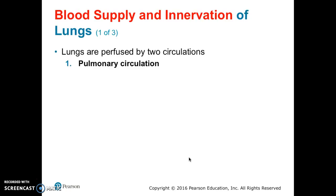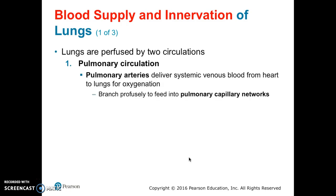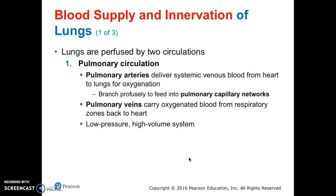Next, we move on to the blood supply and innervation of the lungs. The lungs are perfused by 2 circulations. The first is the pulmonary circulation: pulmonary arteries deliver systemic venous blood from the heart to the lungs for oxygenation and branch profusely to feed the pulmonary capillary networks. Pulmonary veins carry oxygenated blood from the respiratory zones back to the heart. The pulmonary circulation is a low-pressure, high-volume system.